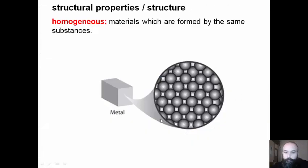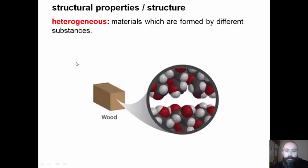The structure of building products can be homogeneous, which are materials formed by the same substances, or heterogeneous, materials which are formed by different substances.